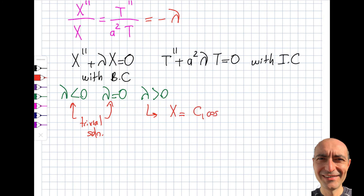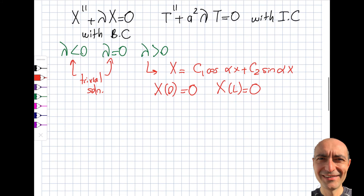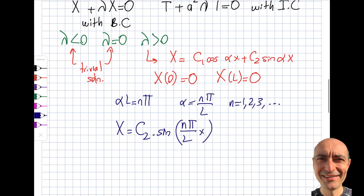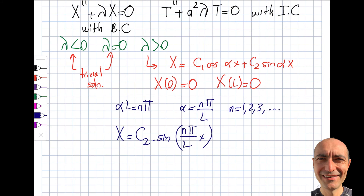Only the positive case (λ > 0, written as α²) gives a non-trivial solution. Solving the X-ODE: X = C₁cos(αx) + C₂sin(αx). Applying the boundary conditions — string fixed at both ends — gives the eigenvalue condition αL = nπ, so α = nπ/L, with n = 1, 2, 3, … The corresponding eigenfunction is C₂sin(nπx/L). This completes the Sturm-Liouville problem.